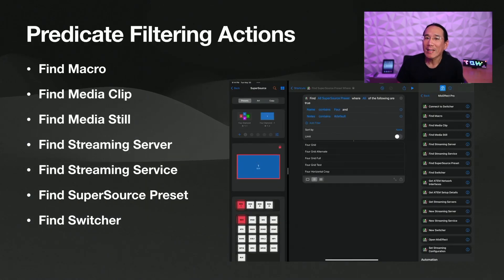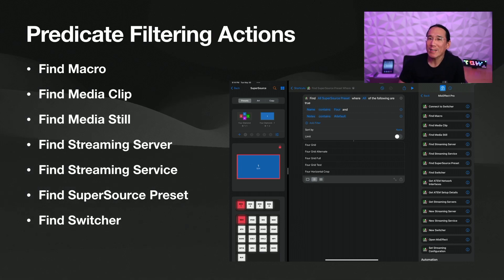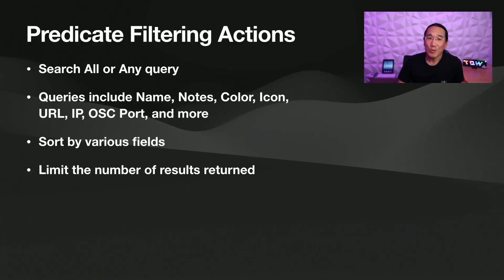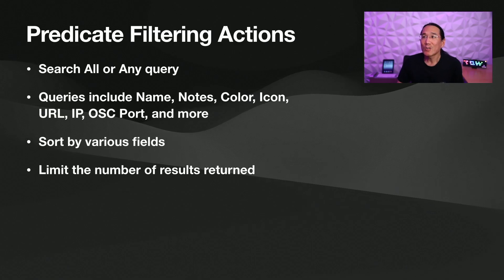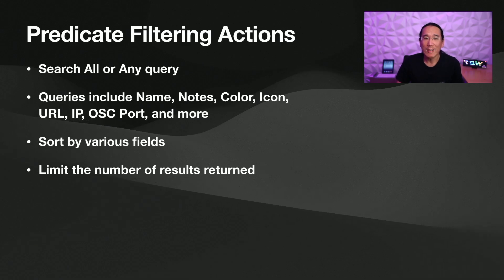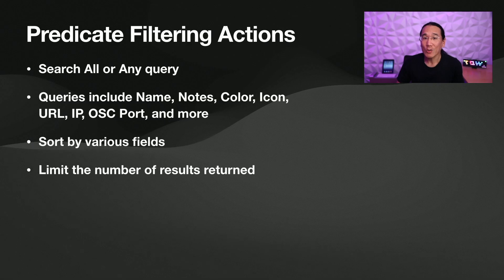Now let's take a look at the predicate filtering actions. We have new actions for find macro, find media clip, find media still, find streaming server, find streaming service, find super source preset, and find switcher. Predicate filtering allows you to search using different query parameters — you can search for all or any. For example, show me all the super source presets that start with the word 'for' and have the tag 'default' in the notes field, and it will pull all matching presets.